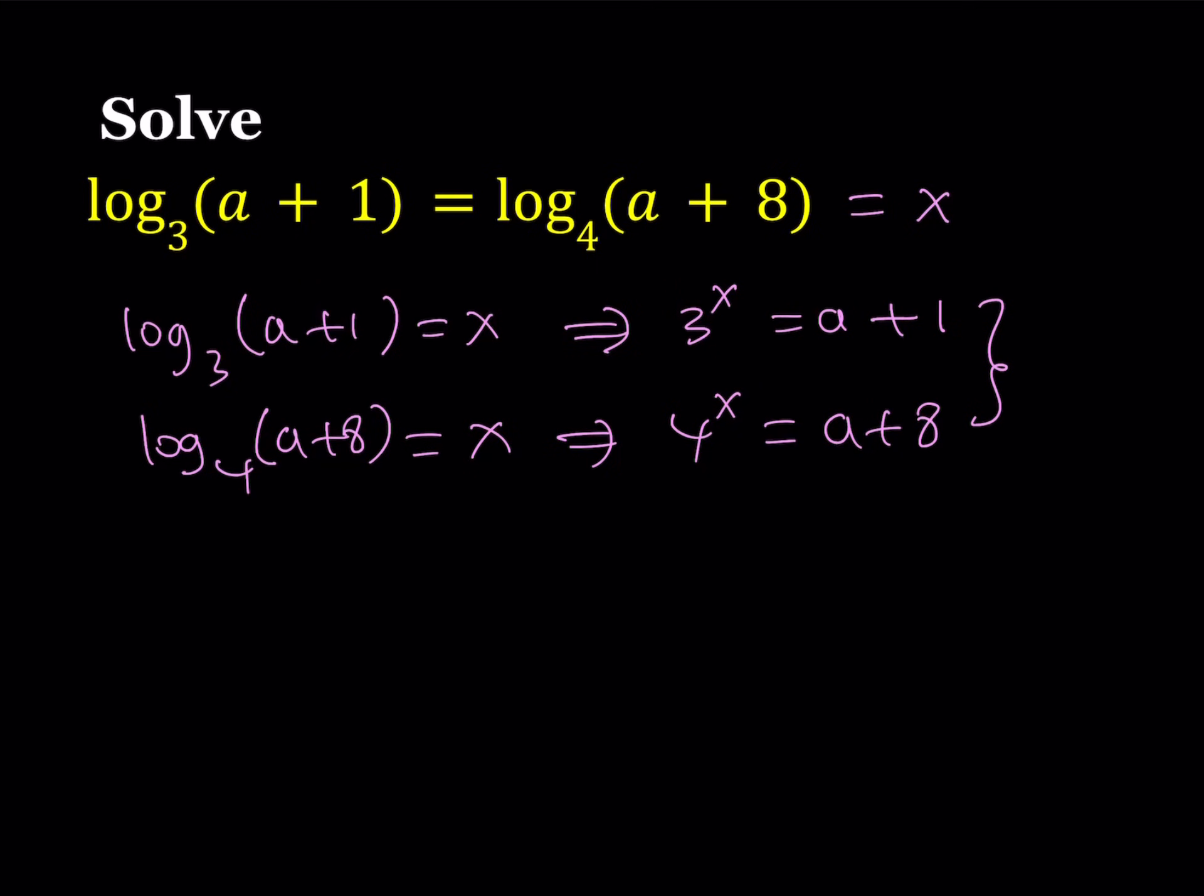Because I have 3^x equals a+1 and 4^x equals a+8. And as you know, a+1 and a+8 are related. One of them is 7 more than the other. So I can safely say that 4^x, which happens to be a+8, is 7 more than a+1, which happens to be 3^x.